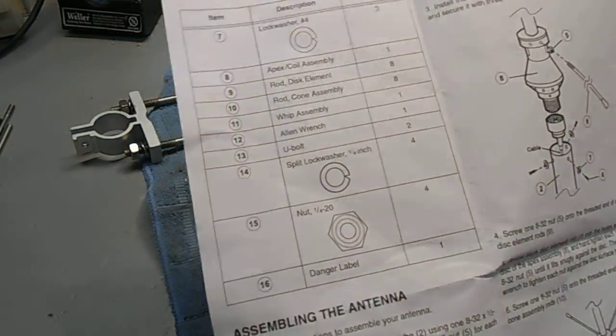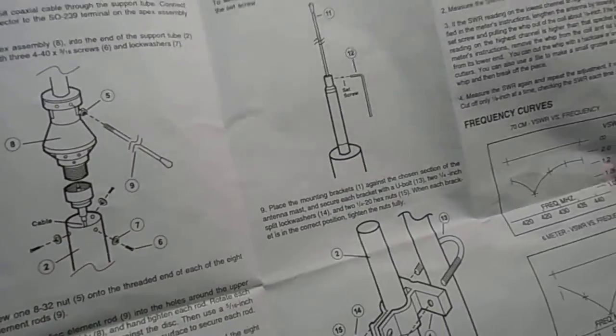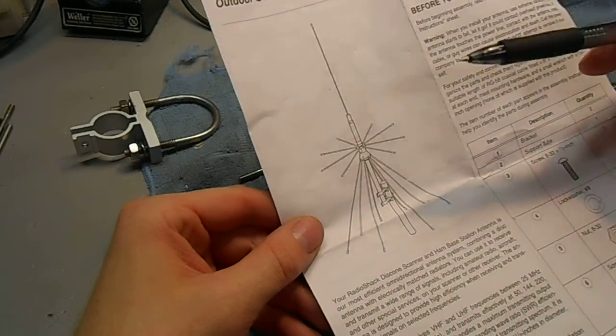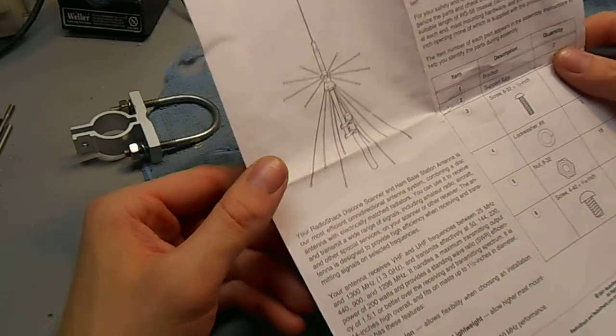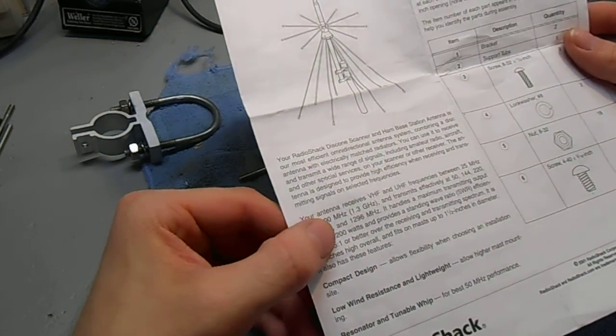The assembly is fairly quite simple. Nothing really major you have to do. The wideband nature of these discone antennas means you can also transmit on them too, over the VHF and the UHF ham bands.